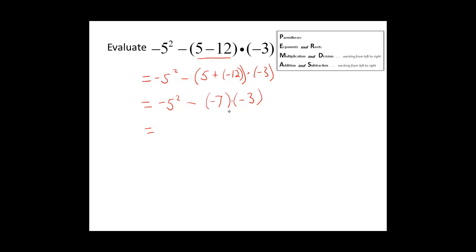There is nothing left to compute inside these parentheses. So now we will move on to our exponents and roots. Here is our exponent and root part of this problem. We see this as negative 5 squared.